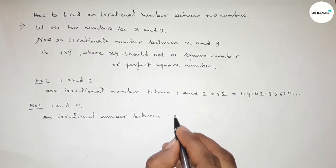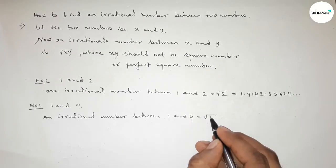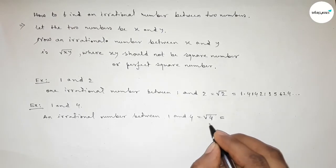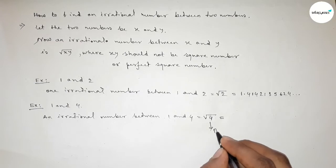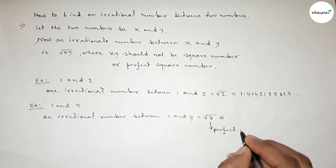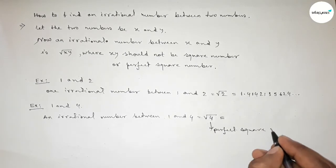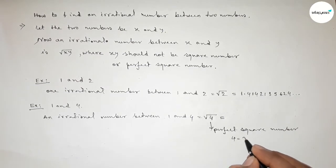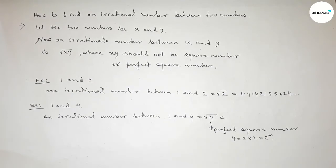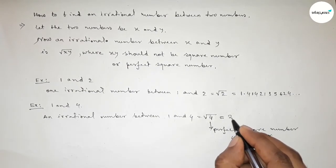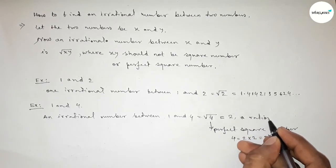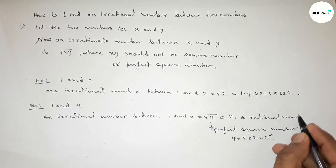So one irrational number between 1 and 4 equals by the method root over 4. And here 4 is a perfect square number or a square number, and we can write 4 as 2 into 2 equals 2 squared. So obviously here equals 2, and 2 is a rational number.